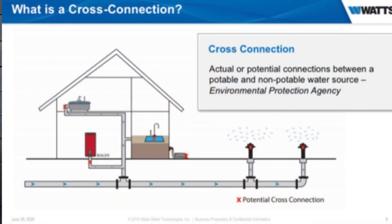We're going to talk about cross-connection. Cross-connection is the actual or potential cross-connection of your potable water system — where contaminants, gas, or whatever could be mixing in. That's your first thing: a cross-connection.